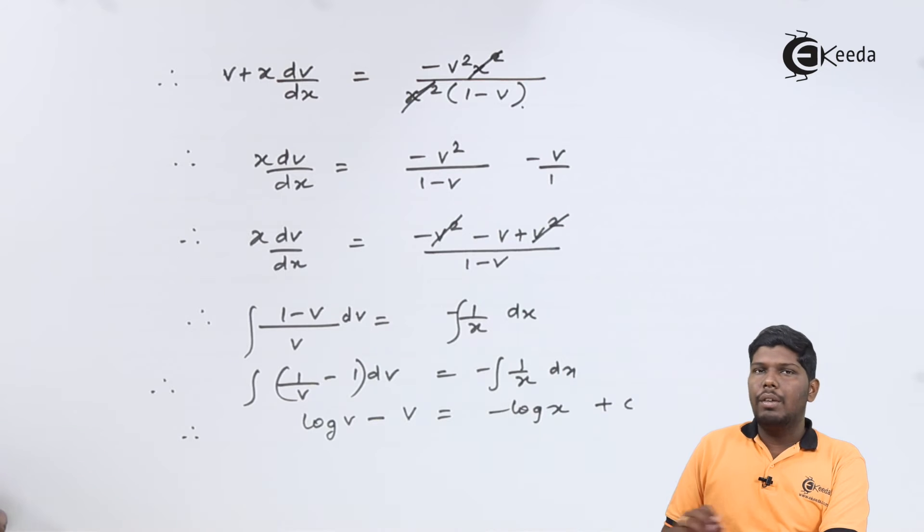Integration of 1 by x will give you log x. Now let us substitute v as y by x. After substituting v as y by x, here you can use the property log a minus log b that will give you log y minus log x.